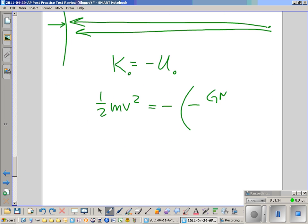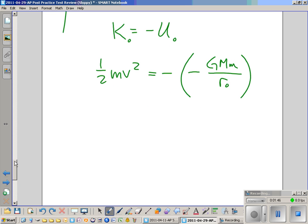Negative G big M, mass of Earth, times test mass, divided by r₀, which is Earth's radius. That's where we're taking our position to be.